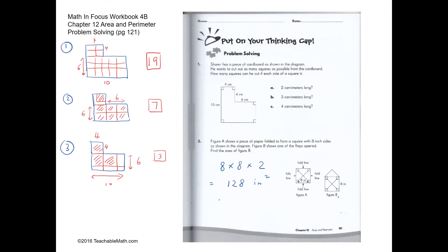Problem solving question 1: we have to form as many squares as possible from the figure. If each square is 2 centimeters long, counting carefully we get 1, 2, 3, 4, 5, 6, 7, 8, 9, 10, 11, 12, 13, 14, 15, 16, 17, 18, 19 — we will have 19 squares. If they are 3 centimeters long, we would have 7 squares.